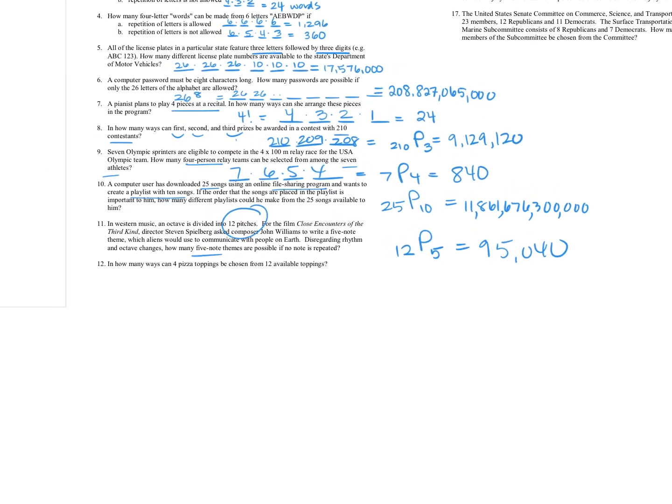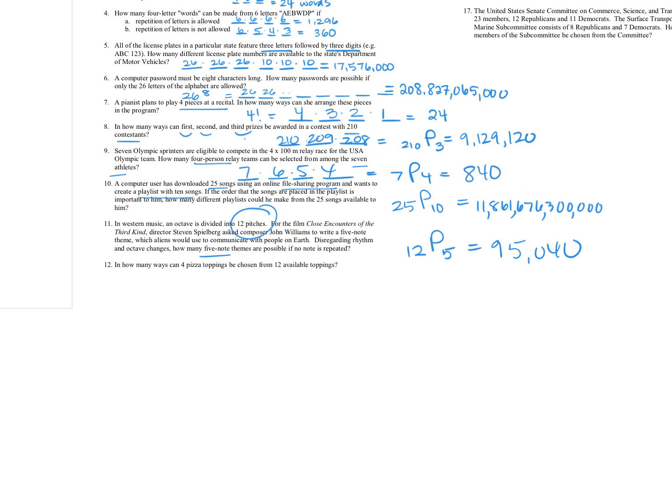Again, we'll look at putting in that 12P5. So I go to my function, NPR, and I'm going to type in 12, comma, five. And we see it's 95,040. So now I'm going to come over here, 95,040. Okay. For number 12, we're looking at how many ways four pizza toppings can be chosen from 12. So we know we're choosing from 12, we want four, but now this one thinking about pizza toppings, they're going to just be scattered on the pizza. The order that we put them shouldn't really matter. So this is actually going to be a combination.